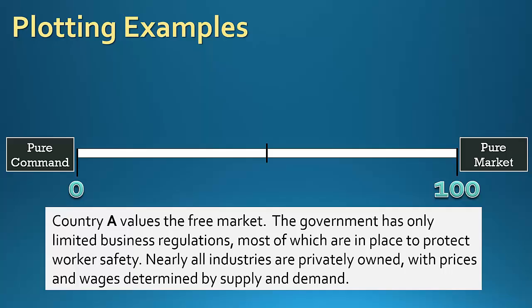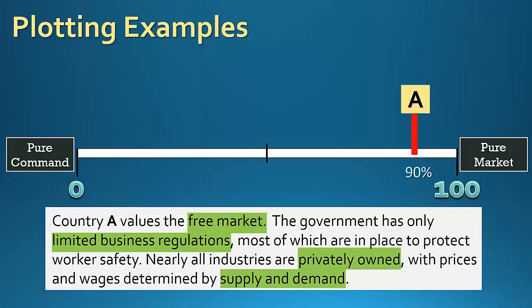Let's look at hypothetical country A. We'll read the description and look for key words. Country A values the free market. The government has only limited business regulations, most of which are in place to protect workers' safety. Nearly all industries are privately owned, with prices and wages determined by supply and demand. Highlighting the key terms — market terms in green, command terms in pink — these are all market terms: free market, limited business regulations, privately owned, and supply and demand. It doesn't say all industries are privately owned, but nearly all, so I'm putting this at about 90%.